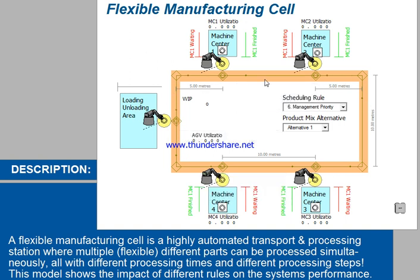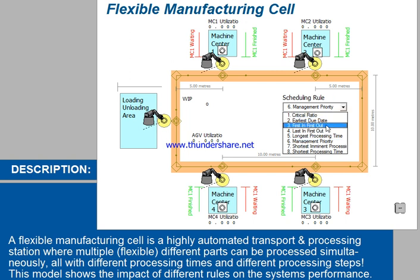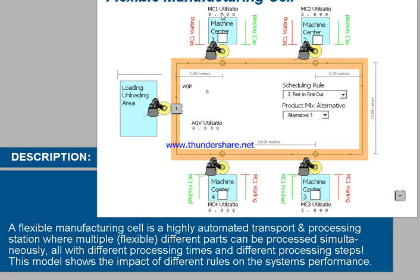We have a loading and unloading area onto the conveyor system line, with machine one, machine two, machine three, and machine four. If we set the rule to first-in first-out and run the program, you can see how each machine is running, how the parts are going through the system and exiting, and where each part is at any given machine.